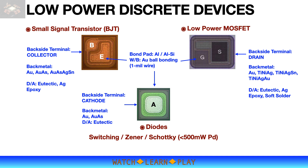MOSFET is also a three-terminal device. It has the top side as the gate terminal in the form of a small bond pad, and also the source terminal, which is a large aluminum bond pad suitable for wire bonding, clip bonding, and even flip chip process. Common backside metalization for MOSFET is layers of titanium, nickel, or titanium, nickel, silver, and tin.